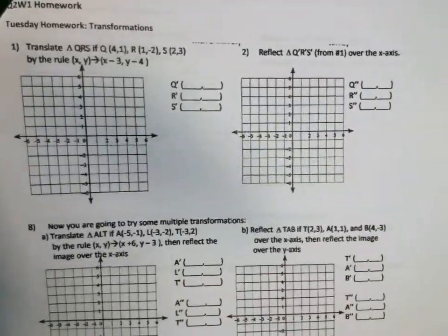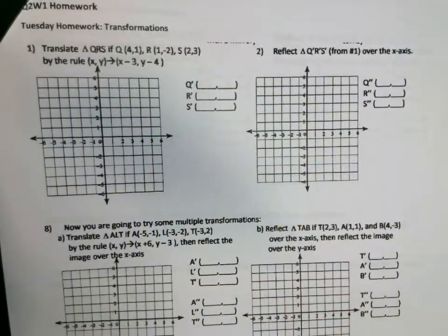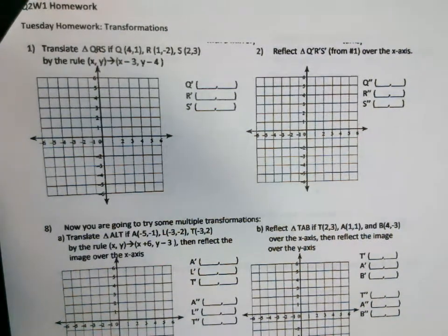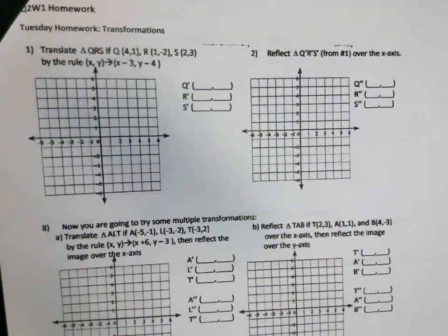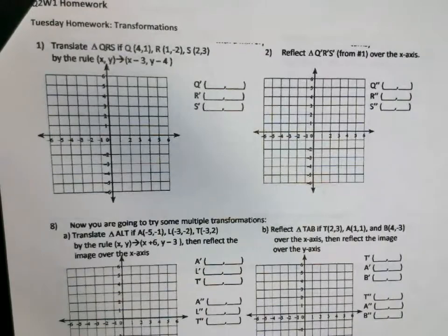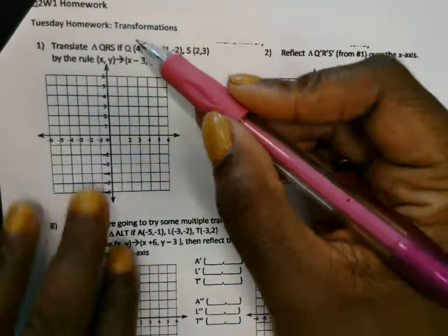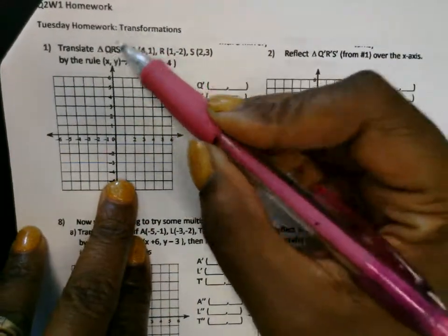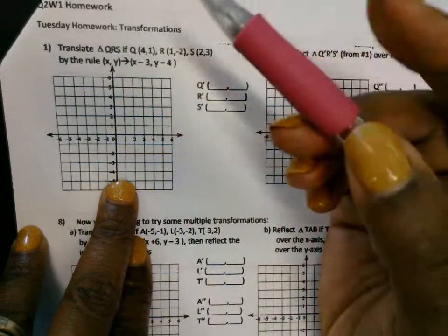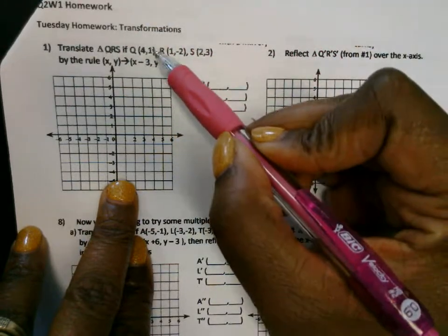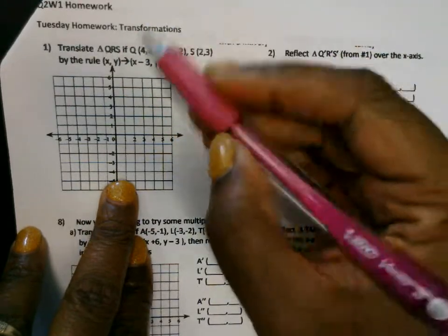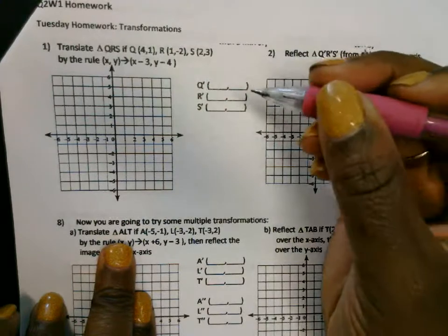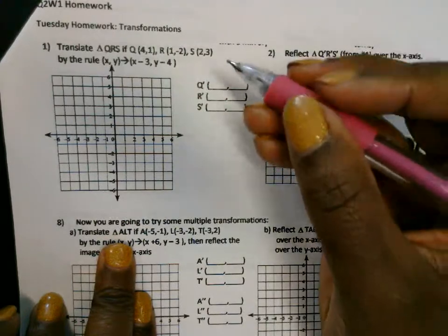All right, class, so this is the homework help for Tuesday, quarter two, week one. So it says translate. Remember, translate means to slide, and you're sliding this triangle. This is the pre-image, and I know it's the pre-image because there's no tick mark. So let's graph the pre-image first, before it actually moved.